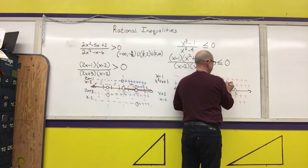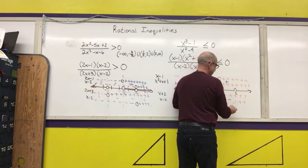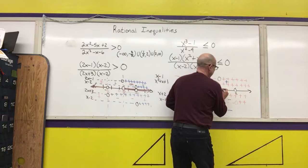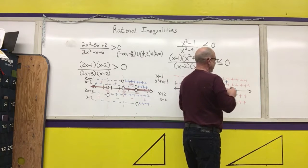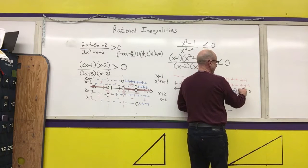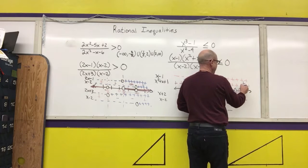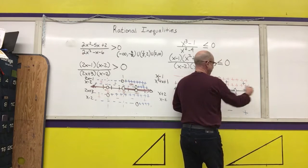In the interval between one and two: positive times positive is positive; positive times negative is negative; positive over negative is negative. So everything between one and two gets shaded in. In the last interval: positive times positive is positive; positive times positive is positive; positive over positive is positive — nothing in this region gets shaded.